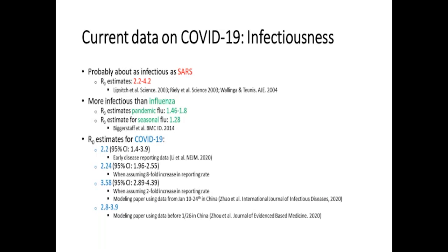Looking at R0 specifically for SARS and COVID-19 compared to influenza: in the SARS outbreak, evidence suggests an R0 between 2 and 4 — for every symptomatic person, they infect approximately 2–4 others. With influenza, there's a distinction between pandemic and seasonal, but it's relatively low: 1.2–1.8 individuals infected per case. SARS-CoV-2 shows approximately 2.2 to 4 persons infected per case — very similar to SARS.